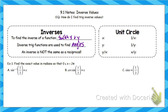Just review for your unit circle: the x-coordinate is cosine, the y-coordinate is sine, y divided by x is tangent, the reciprocal of cosine is secant, the reciprocal of sine is cosecant, and x divided by y is cotangent. If you know your unit circle, today will not be too terrible.